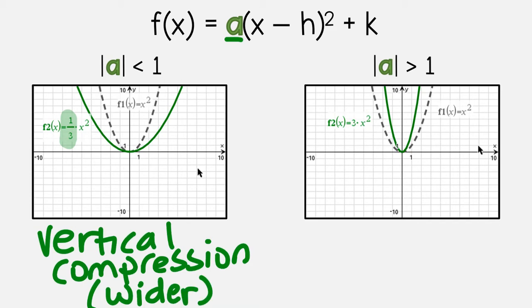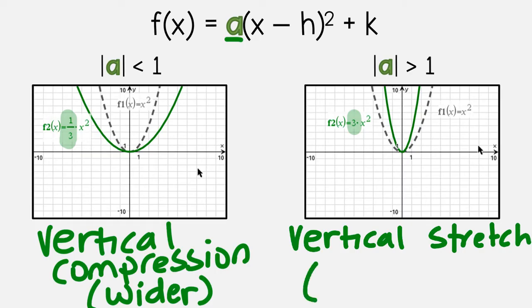Then for the example that's on the right side, I use the number three. So three is bigger than one. When the number is bigger than one, we call this a vertical stretch. And if you look at the picture, the green parabola is narrower than the gray dotted line. So when it's a vertical stretch, it'll look narrower.